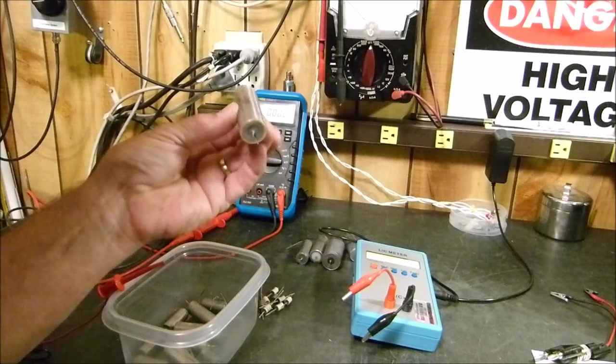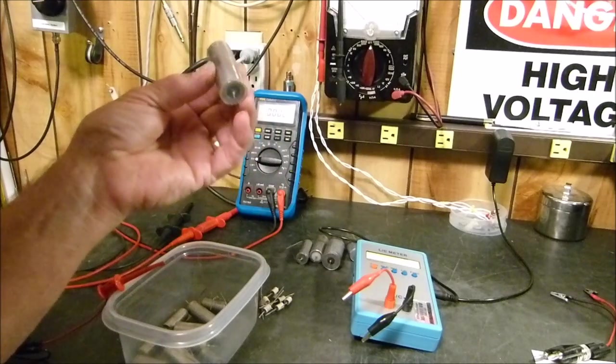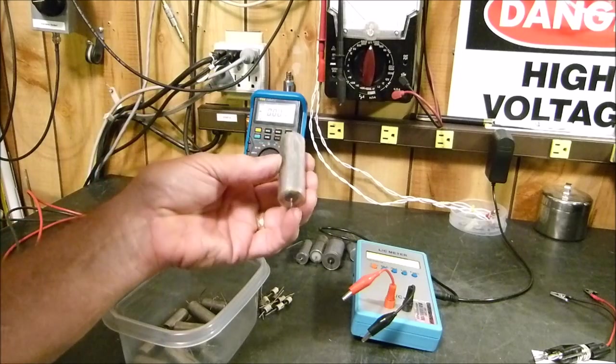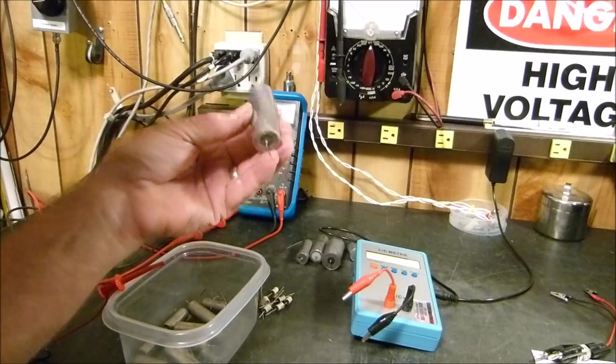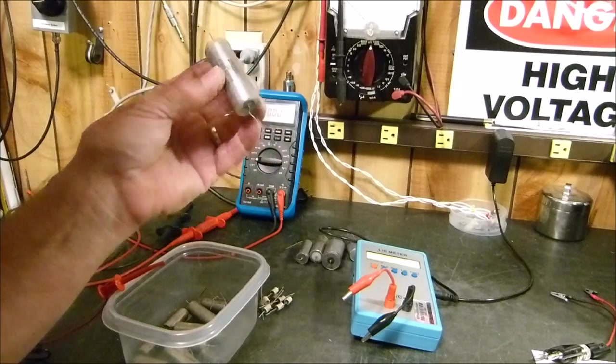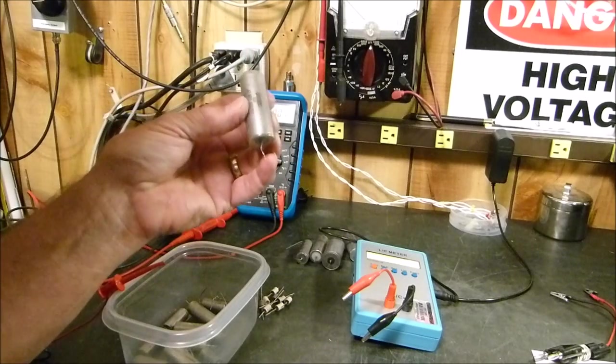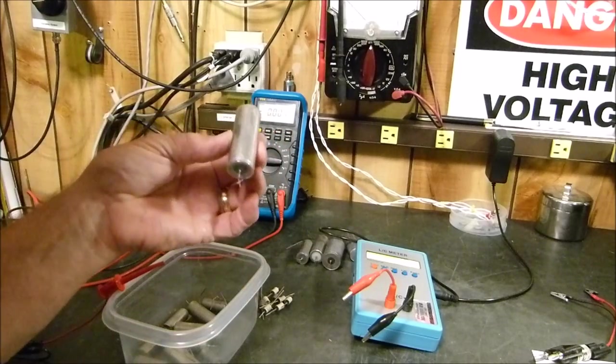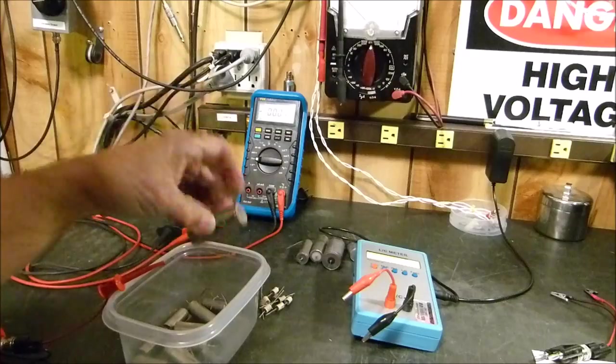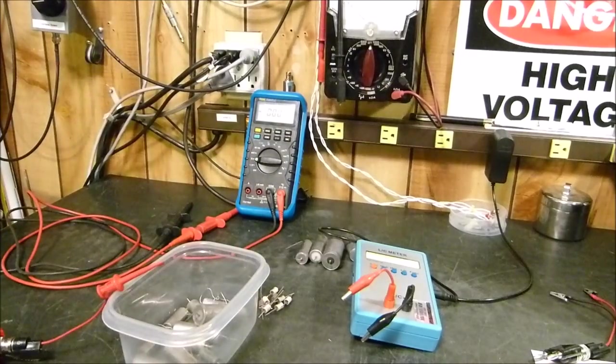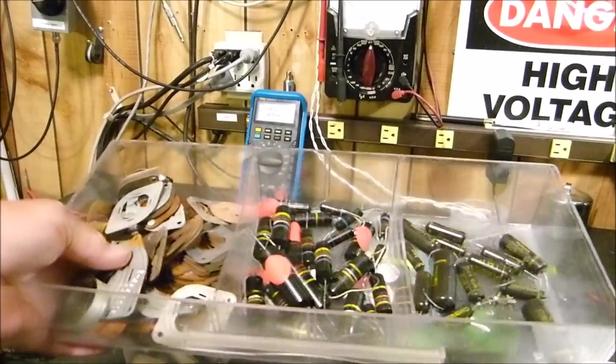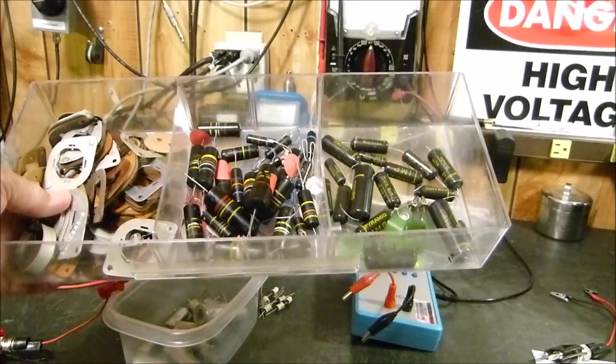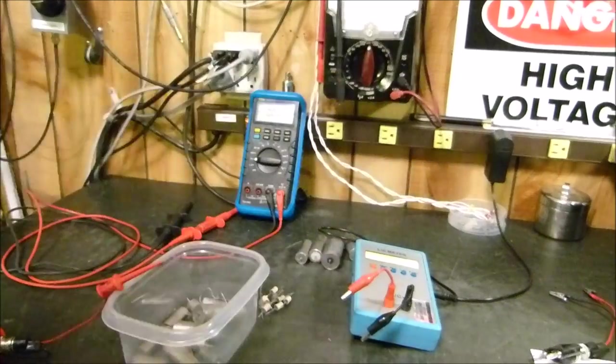If you're going to the trouble to disconnect at least one end of it, which you're probably going to have to do to test it properly, or completely remove it from the circuit, if you're going to that much trouble then just put a new one in. I'm not against that philosophy, I'm not saying that isn't correct. But you may want to retain your old bumblebee capacitors like these guys right here.